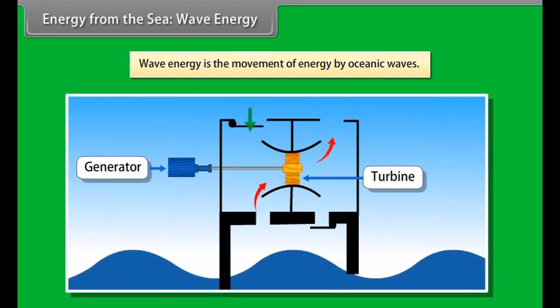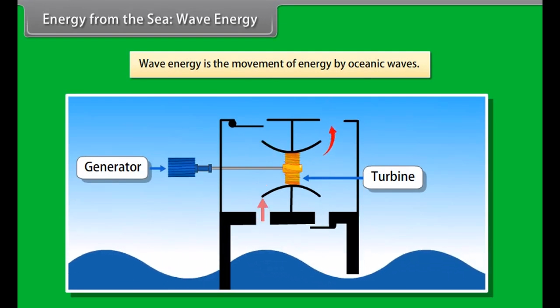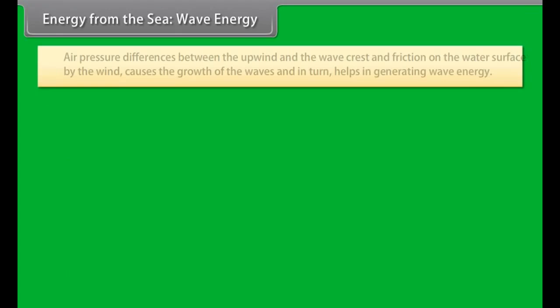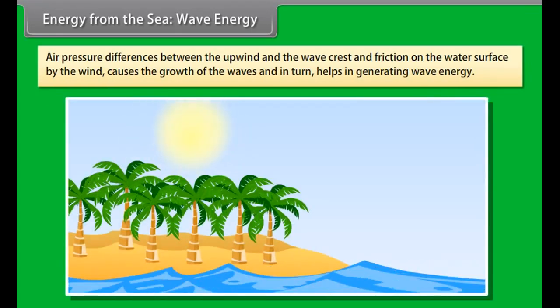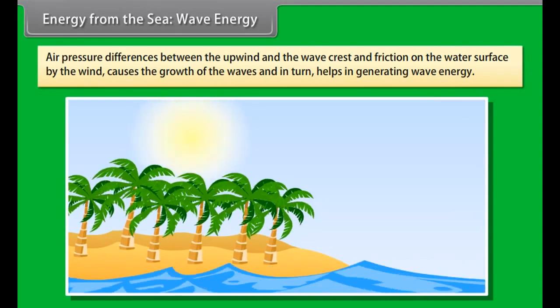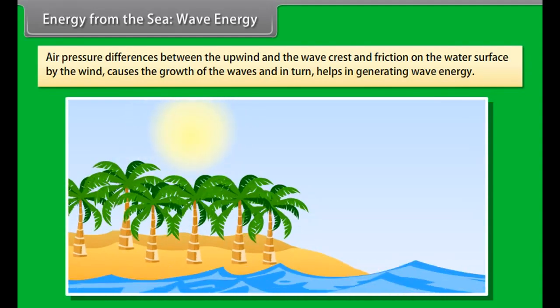Tidal energy is a form of hydropower that converts the energy of tides into electricity. This is a renewable source of energy. Tidal energy is extracted from the oceanic tides. Tidal forces are periodic variations in gravitational attraction exerted by the moon.